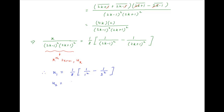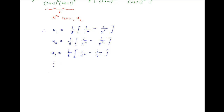Put k equal to 2: u2 equal to 1 upon 8 times [1 upon 3 squared minus 1 upon 5 squared]. Put k equal to 3: u3 equal to 1 upon 8 times [1 upon 5 squared minus 1 upon 7 squared]. And so on. Put k equal to n: un equal to 1 upon 8 times [1 upon (2n minus 1) whole square minus 1 upon (2n plus 1) whole square].